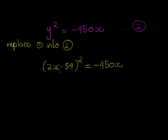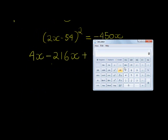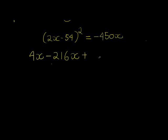From here I can just multiply out this bracket, take all the x to one side and solve the equation. So I get 4x squared, what is this, -216x plus 54 squared. What's 54 squared? I'm not going to waste your time trying to do it in my head. Let's use the calculator. 54 squared, 2916.